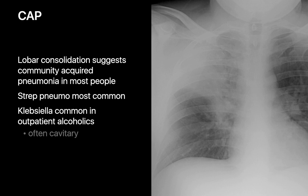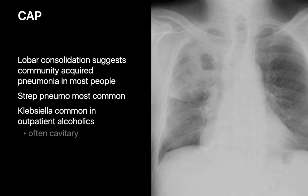Community-acquired pneumonias commonly present as a region of consolidation, sometimes lobar in extent. In a patient with lobar consolidation, this is the diagnosis we typically think of first. The most common pathogen is Streptococcus pneumoniae, though in alcoholics it's important to remember Klebsiella, which can sometimes cavitate.